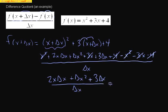And if we do this step right, we'll notice that every term in the numerator has a delta x that can be factored out. So then we'll have 2x plus delta x plus 3 all over delta x.